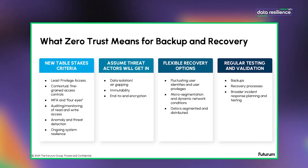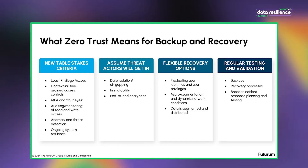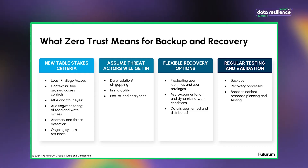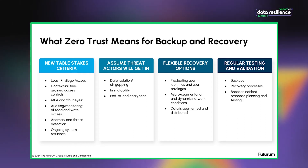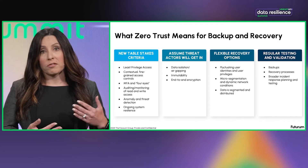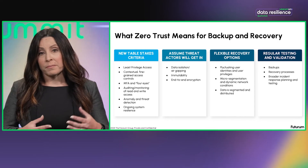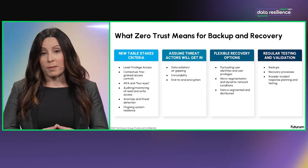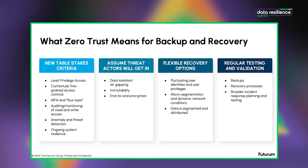There is a strong need within zero trust for ongoing levels of system resilience, as well as more flexible recovery options. This is because in a zero trust architecture, recovery processes become very complicated — user identities and privileges are fluctuating, the network includes micro-segmentation, conditions are very dynamic, and data is segmented and distributed, typically across hybrid multi-cloud environments. This creates the need to more regularly test and validate the effectiveness of backups and recovery procedures, as well as any potential vulnerabilities within them, and a broader need for incident response planning and testing.